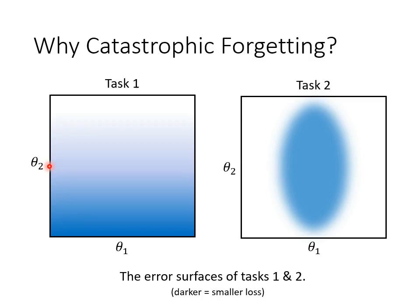We first train the model on Task 1. You start with a randomly initialized parameter θ0, then use Gradient Descent to adjust the parameters, following the gradient direction to update θ0 and get θB. Assuming the number of updates is enough and the loss has dropped low enough, we have finished learning Task 1 and obtained parameter θB.